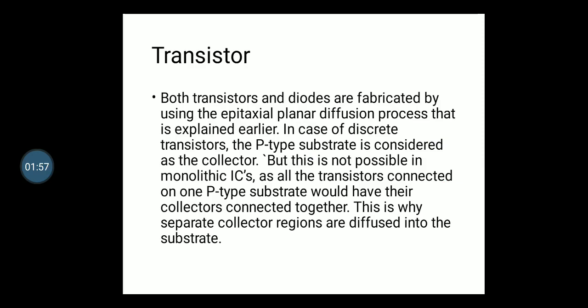Next one is the transistor interconnections. Both transistors and diodes are fabricated by using the epitaxial planar diffusion process. This epitaxial planar diffusion process may be explained in the IC fabrication method. In case of discrete transistors, the p-type substrate is considered as the collector, but this is not possible in monolithic ICs.